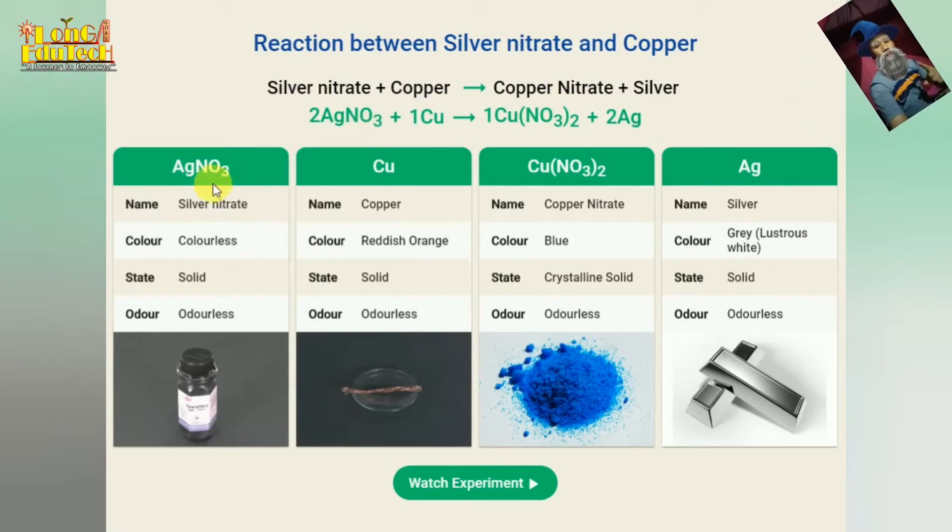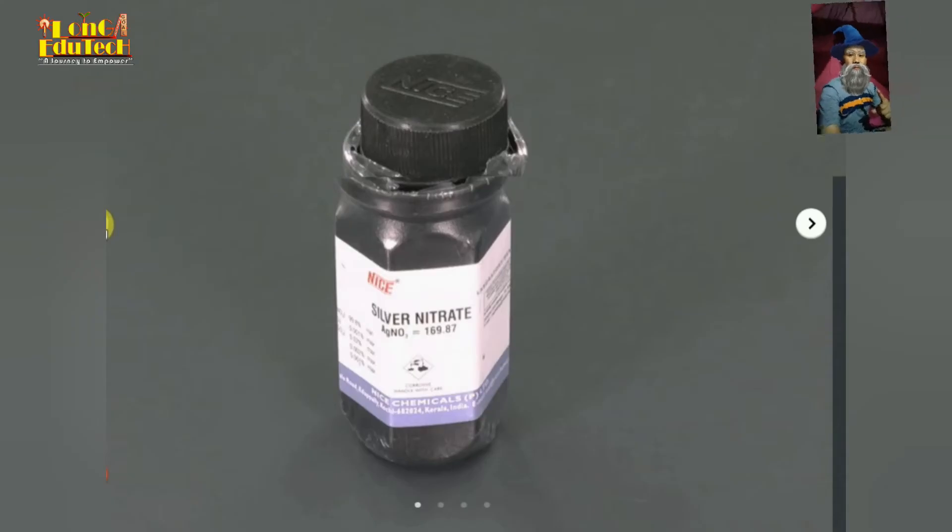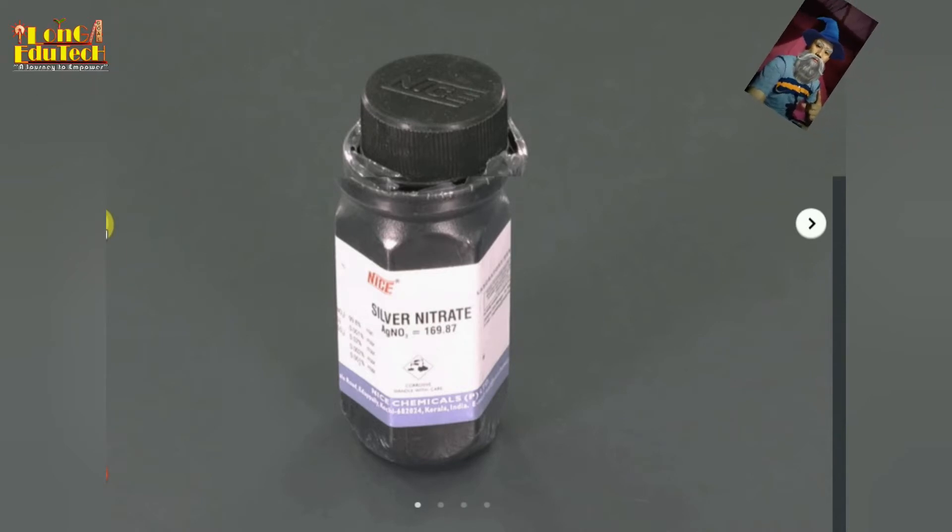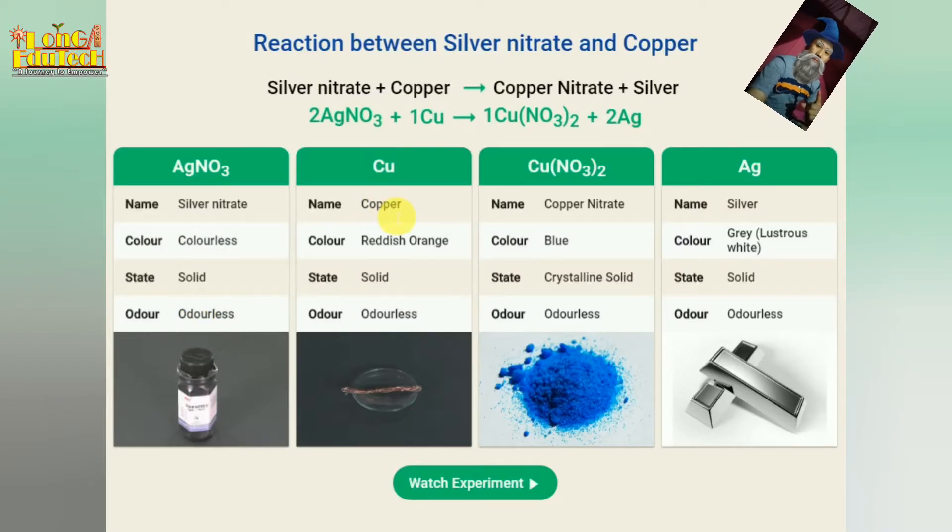Let us see now silver nitrate. This is the colorless solid and odorless, and see here it is stored under the dark bottle. Why? Because it undergoes reactions in the sunlight. Next comes to the copper.